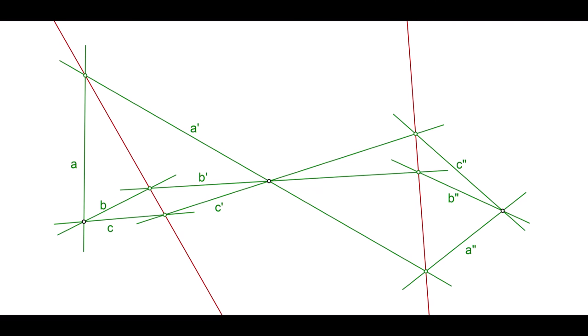In this figure, A is perspective to A' through the red axis on the left, and A' is perspective to A'' through the second red axis. Therefore, A is projective to A''.